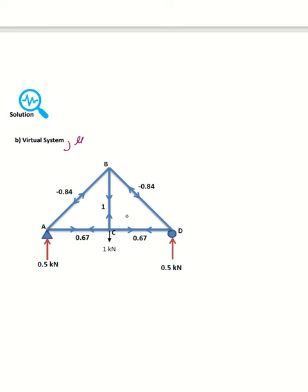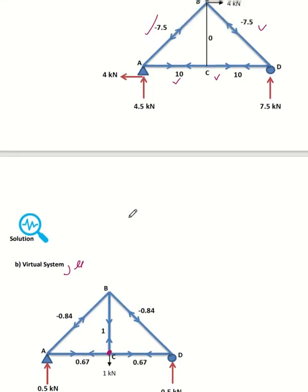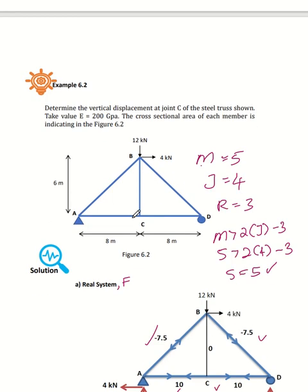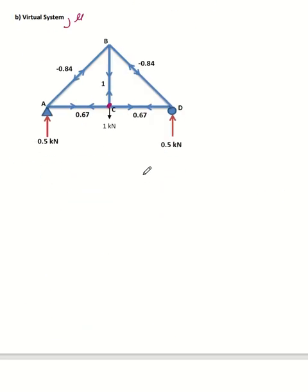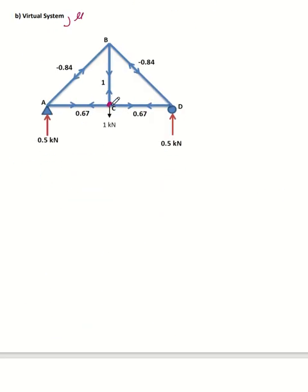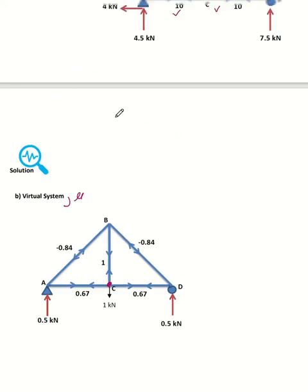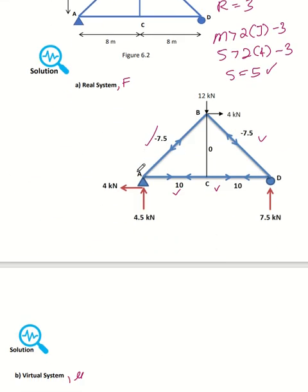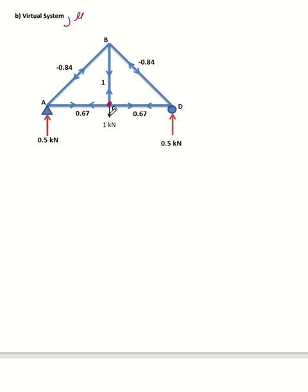Instead, we apply one kilonewton — one unit — at the point or joint where the question asks us to find the deflection. For instance, this question asks for the vertical displacement at joint C, meaning we have to put one unit at point C as a vertical load, not horizontal, because the question asks for vertical displacement.